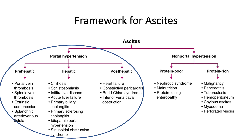Now we can focus on the portal hypertension entities. We can ask hypothesis-driven questions, look for hypothesis-driven physical findings, and order hypothesis-driven tests. For example, if evaluating for cirrhosis, we might ask about alcohol use and hepatitis exposure, look for palmar erythema, spider angiomas, or caput medusae, and order imaging of the liver. Since heart failure is on the differential, we should seek a history of orthopnea and paroxysmal nocturnal dyspnea, and listen for an S3 gallop. For constrictive pericarditis, we're interested in any history of lupus or radiation exposure to the chest, and we would assess the jugular venous pulse closely for Kussmaul's sign, Friedrich's sign, or the W sign.